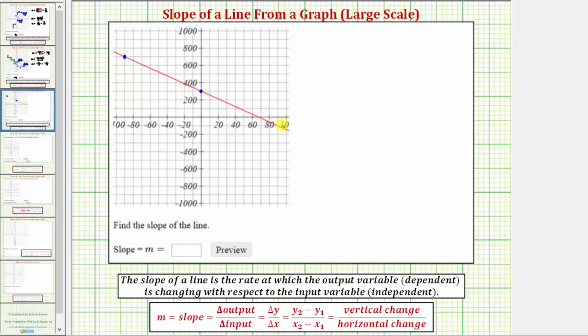On the horizontal axis, there's a tick mark every 20 units. On the vertical axis, there's a tick mark every 200 units. So the coordinates of this point here would be 0 comma 300. This point would have coordinates negative 90 comma 700.